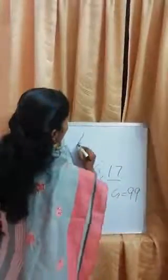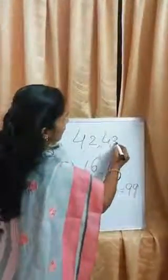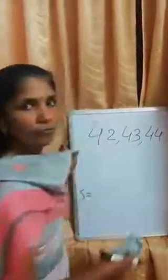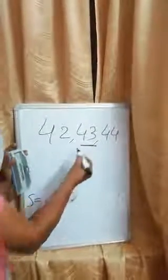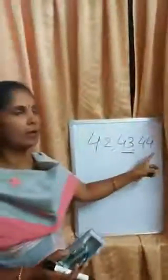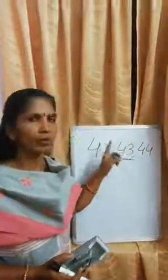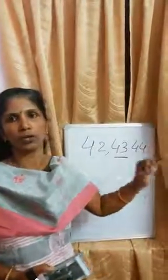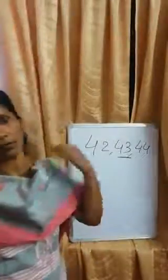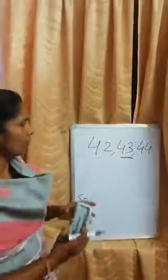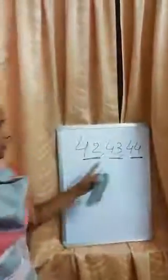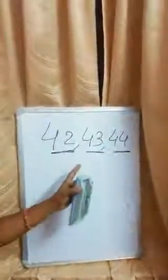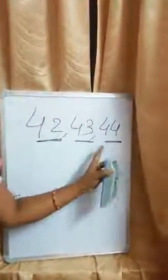Next we study after number. See, one number is 42. The after number of 42 is 43, then 44. The order is 42, 43, 44. Here 43 is called the between number or middle number — 43 is the middle number of 42 and 44. So 42 is the before number of 43, and 44 is the after number of 43.